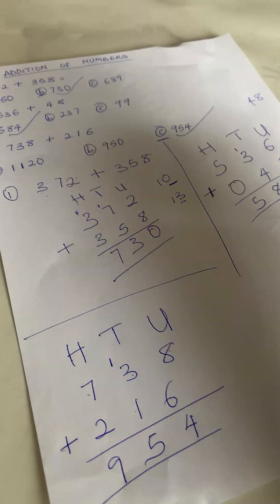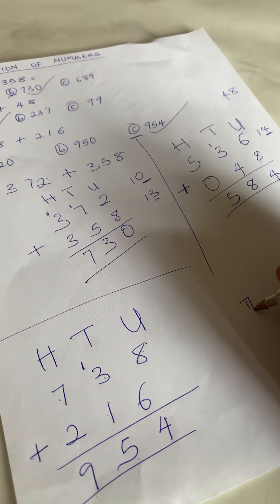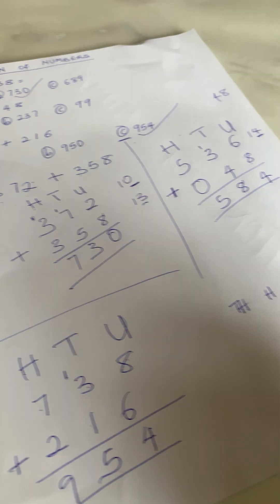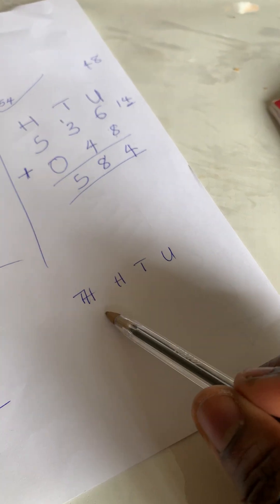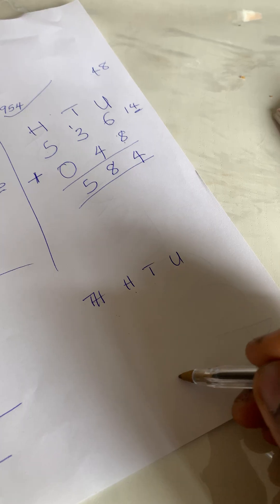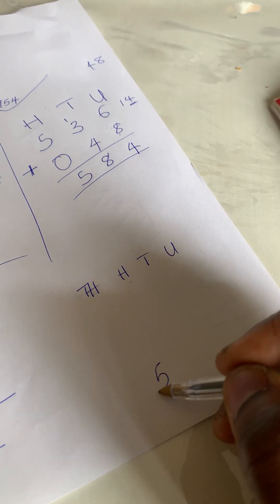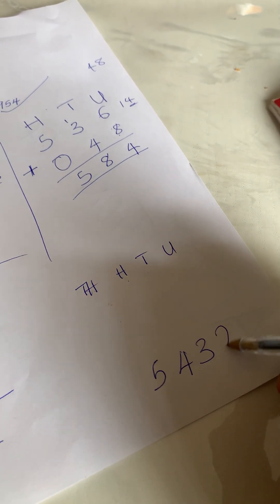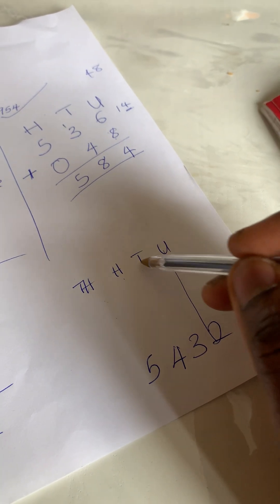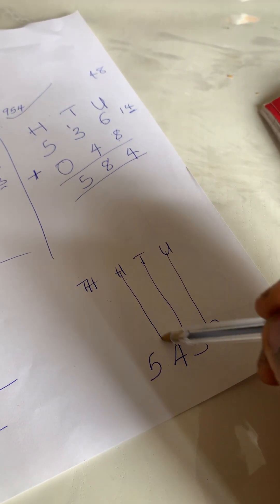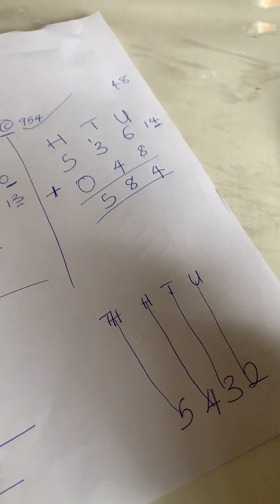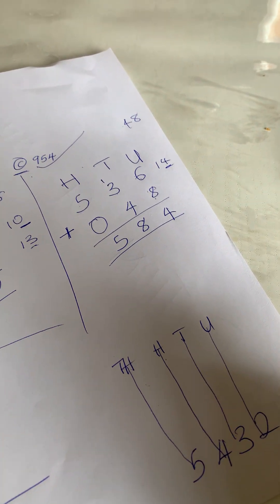If it's four-digit numbers, you use thousands, then hundreds, tens, and units. Like the four-digit number 5432: units goes to 2, tens goes to 3, hundreds goes to 4, and thousands goes to 5. This is where we are going to stop for today.